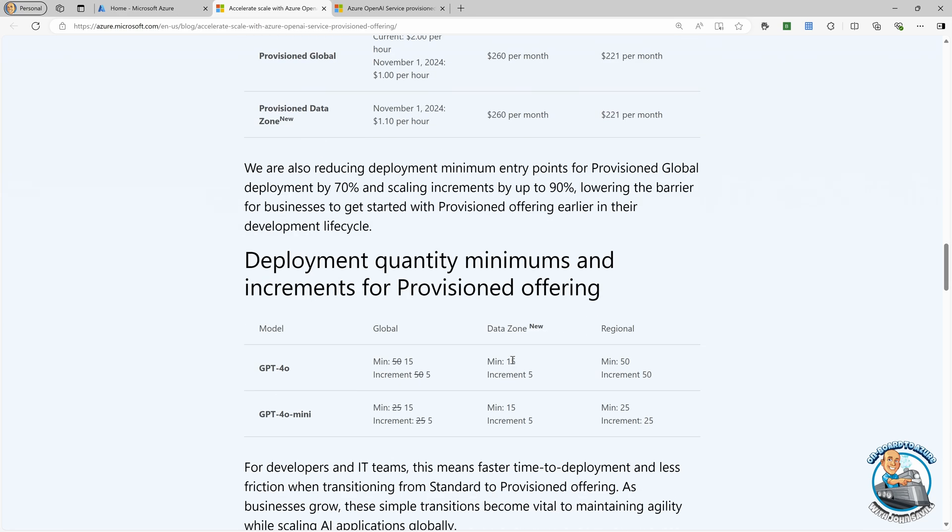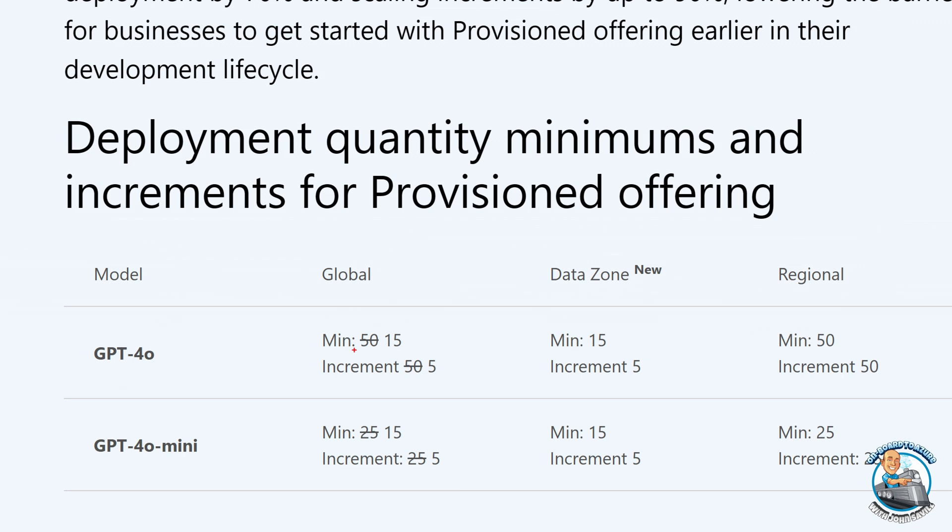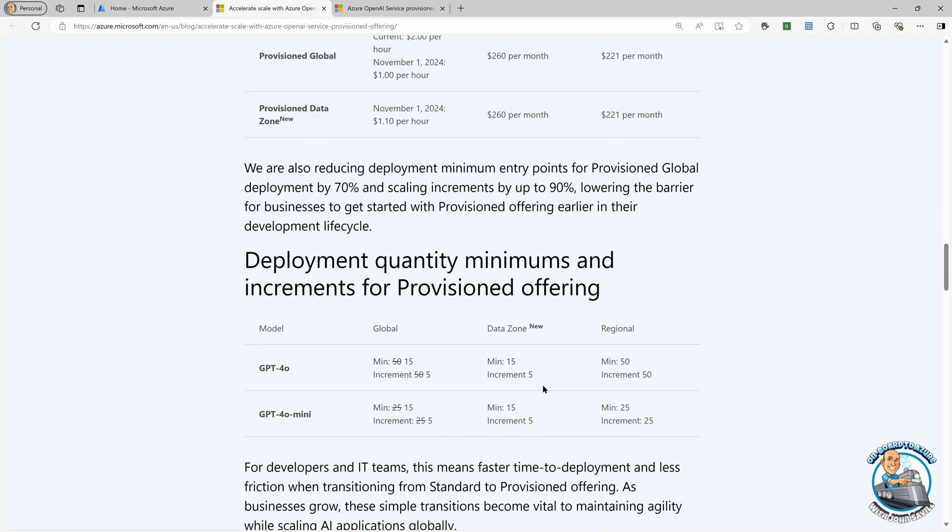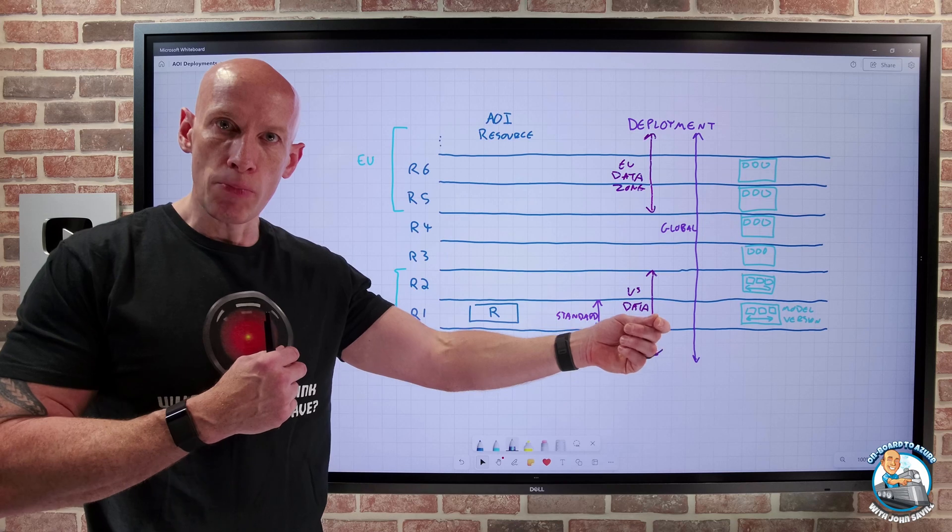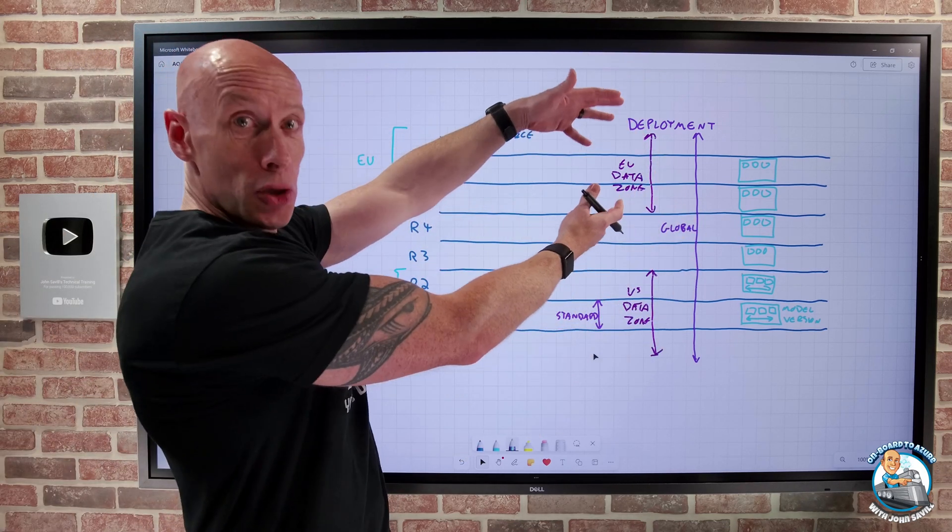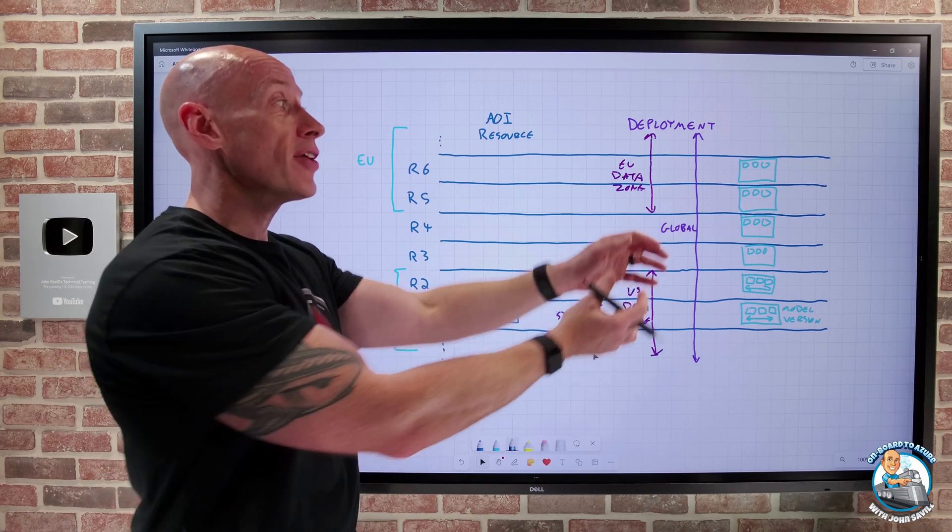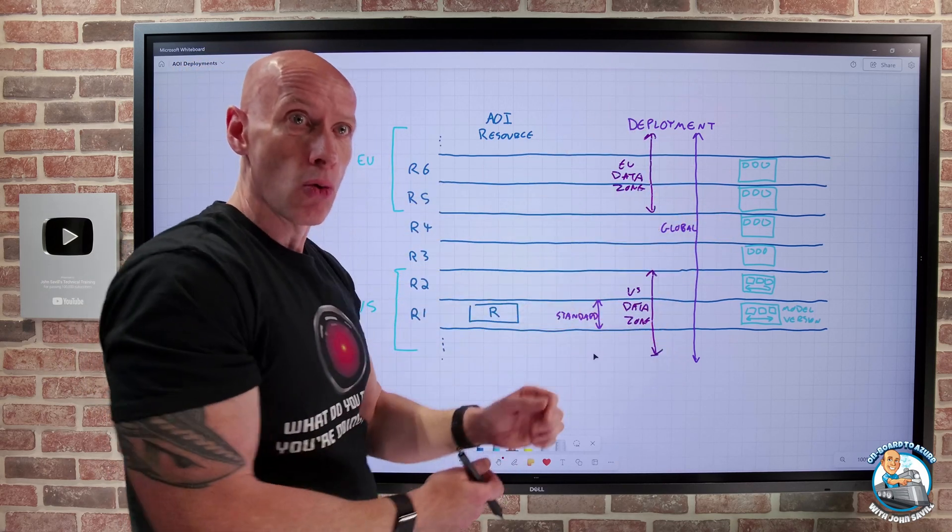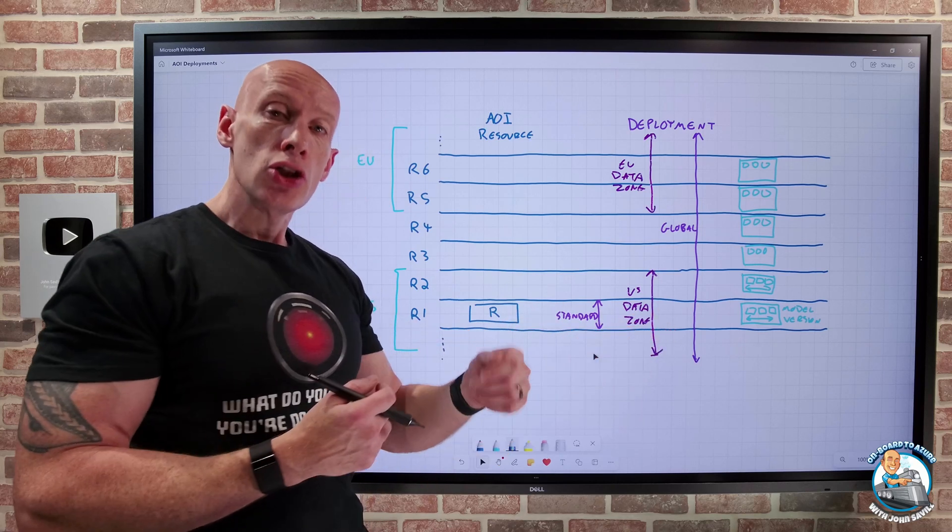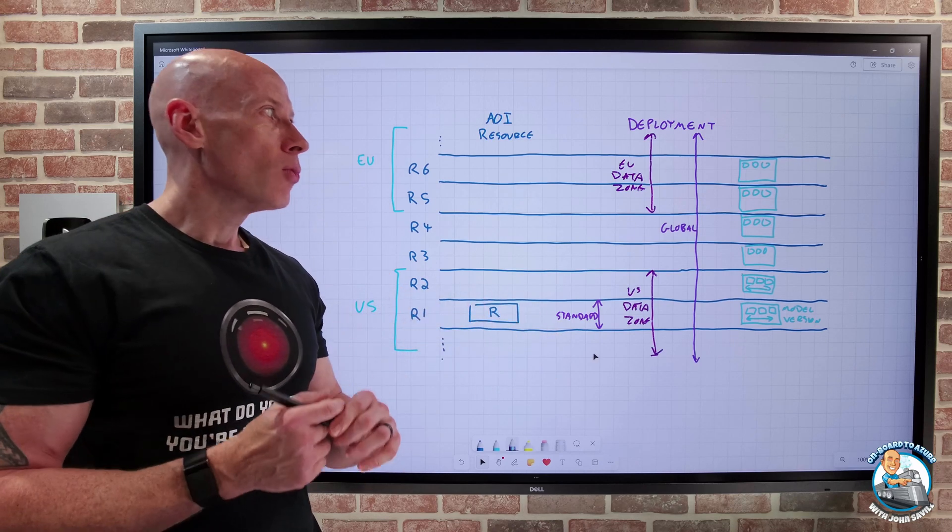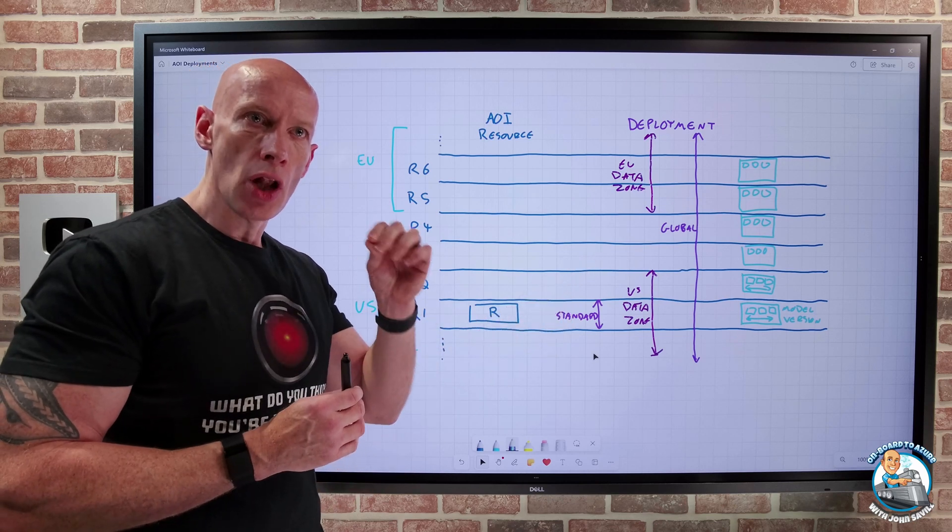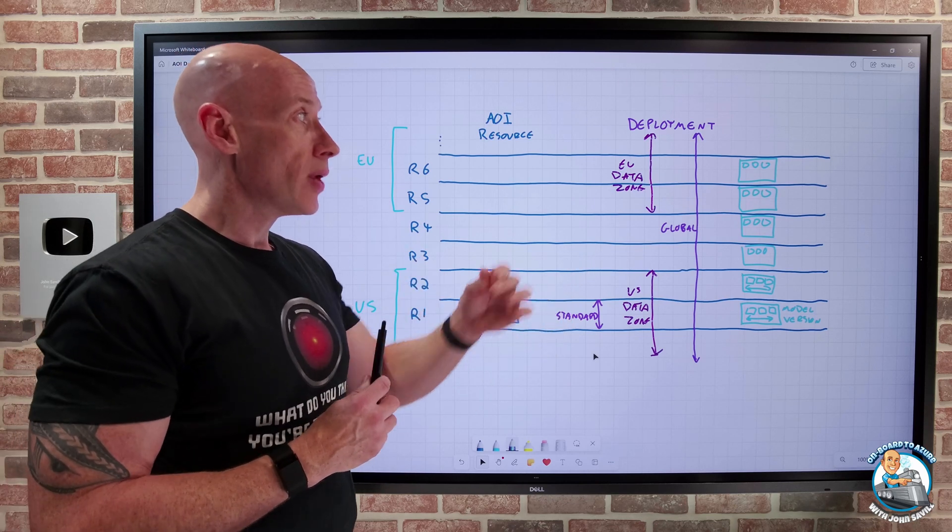And they're also decreasing the minimums for PTUs. Now this is for global and data zone. So the minimum is now 15 and increments of five for both the global and the data zone. So that's really important when you think about, hey, I might be a smaller application, but it's still important to me to have a guaranteed amount of throughput. Now, again, if you're pay-as-you-go and you use global or the new data zone, you have a way greater chance of having the throughput available because there's a greater potential set of capacity pools and therefore the greater chance there's idle capacity so you can achieve it. But even small apps may say, no, this is still a critical app. It's just my volume is lower. Well, now you can onboard to PTUs. It has a much lower barrier of entry. So I can go and get that provision throughput.